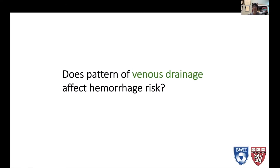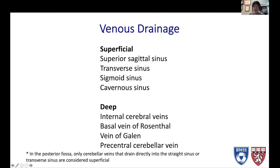What about pattern of venous drainage? Does that affect hemorrhage risk? To define venous drainage more clearly: superficial venous drainage refers to structures that drain to the superficial sinuses — the superior sagittal sinus, the transverse sinus, the sigmoid sinus, and the cavernous sinus. The deep venous system includes the internal cerebral veins, which drain the basal ganglia, thalamus, and that sort of thing.